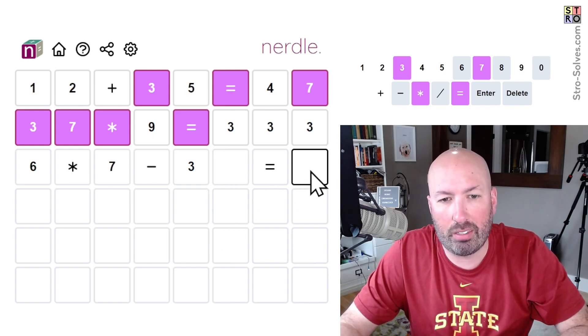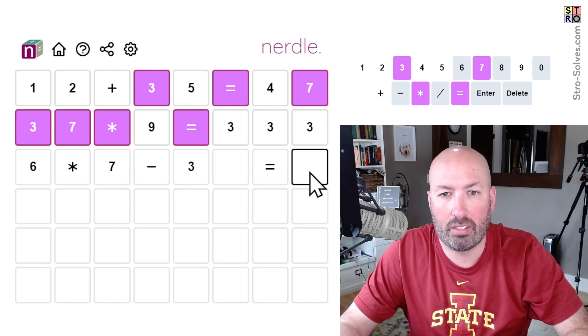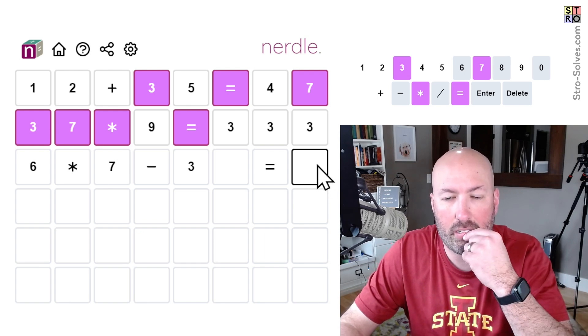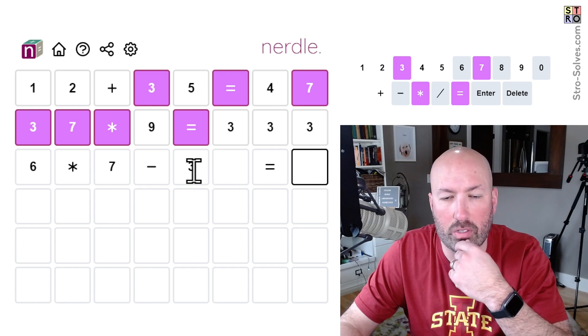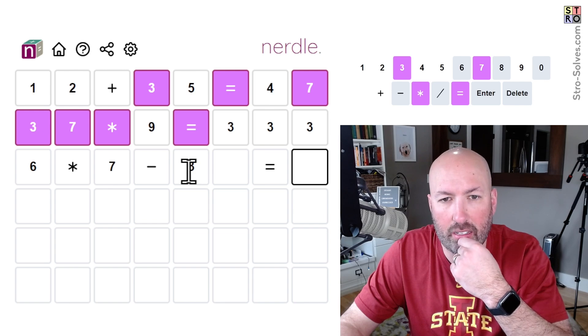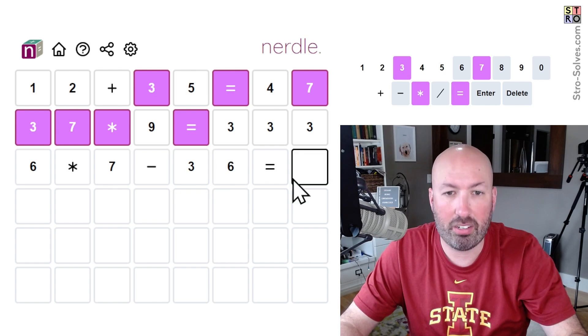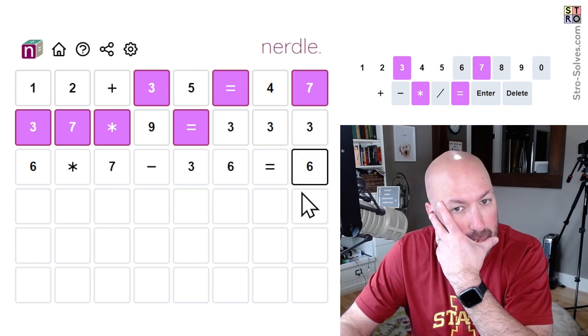But we need to end up with at least six for our answer. So 42 minus 30 something needs to be at least six, which means this has to be less than 36. 42 minus 36 equals 6. I mean that's possible.